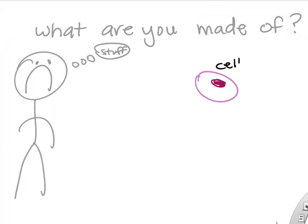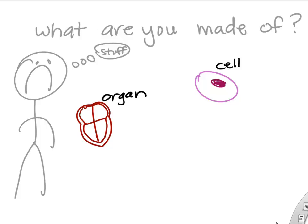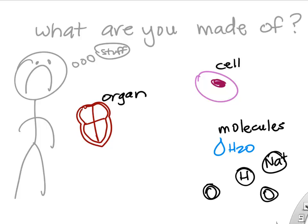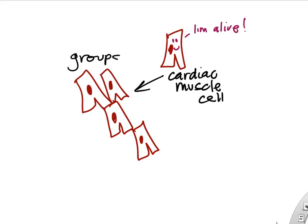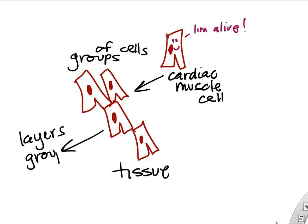One thing to remember is that you're made of cells. You're also made of organs — but what's the relationship? We also have molecules inside and outside our cells, like water, and molecules are made of things like carbon, oxygen, and nitrogen — we call those atoms. A cell is the smallest living unit in the body. If we organize groups of cells together, we call those tissues, and if we take groups of tissues and layer them together, we call that an organ.